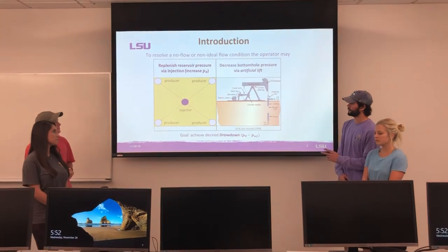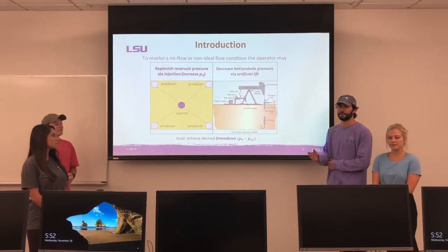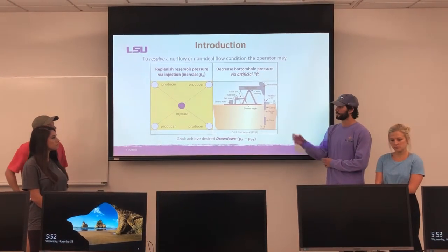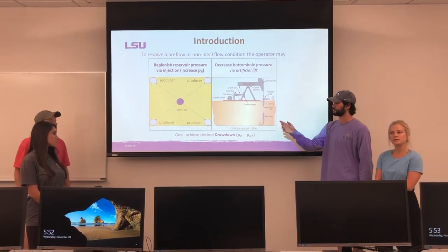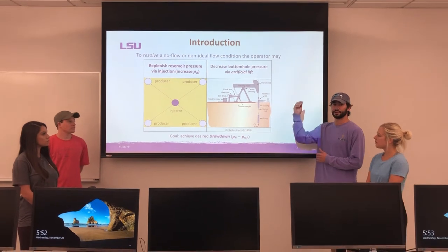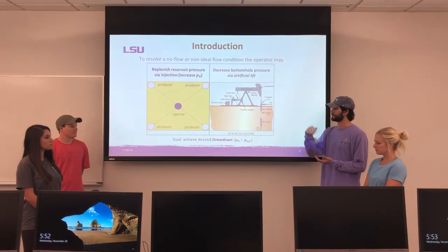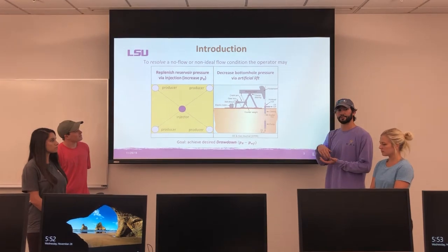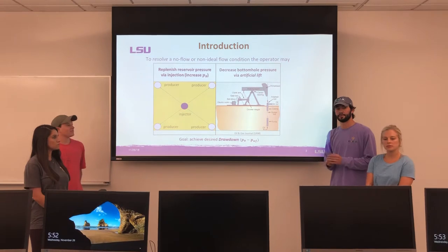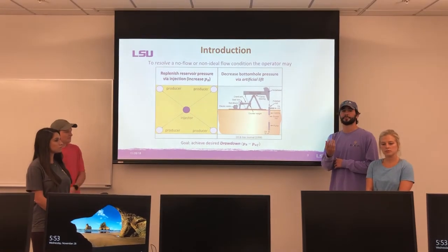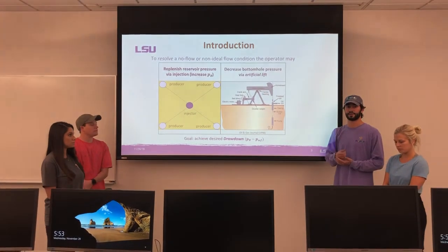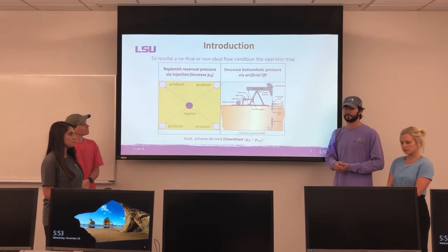Two common ways of enhancing production used today are: first, by drilling an injection well and injecting either gas or water and displacing oil into nearby producing wells; or via artificial lift, such as gas lift, which works by injecting gas through the annulus and inputting it at bottom hole through a gas lift valve. The incoming gas reduces the density of the liquid column above, which reduces hydrostatic pressure at the bottom of the well.